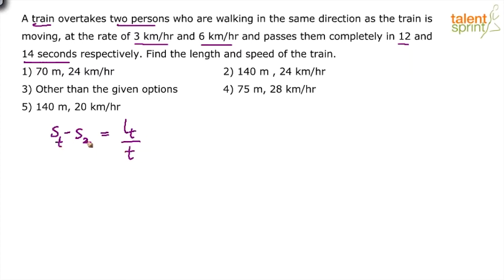So first body here is train, second body is the person. You are able to follow. So speed of the train minus speed of the person equals to length of the train by time. This is the equation that needs to be used. Yes or no?